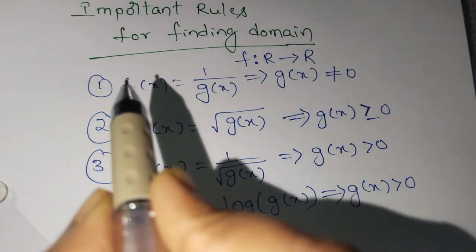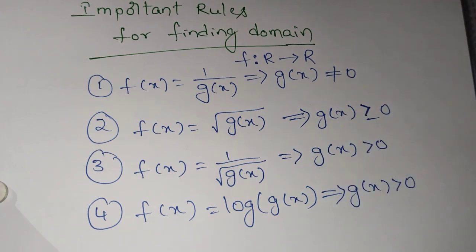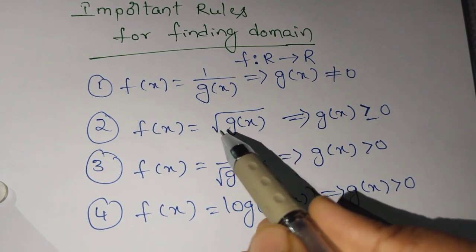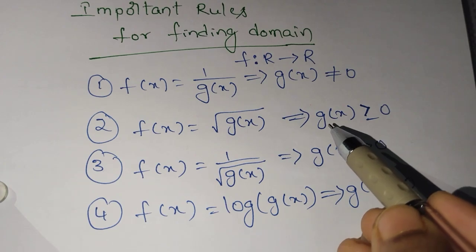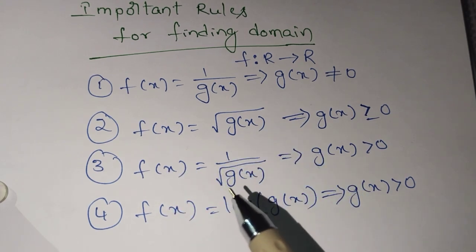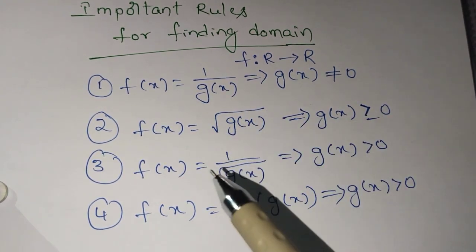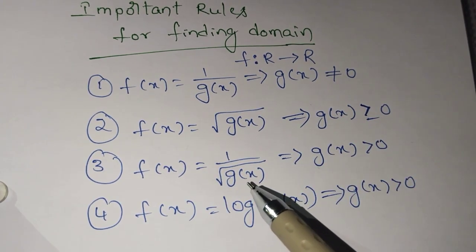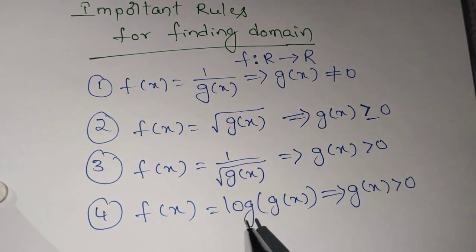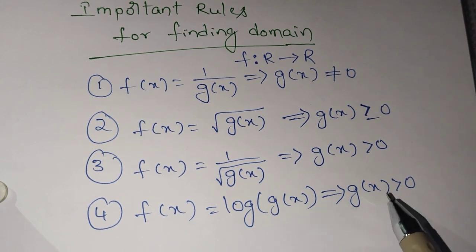Important rules for finding domain. When f(x) = 1/g(x), then g(x) ≠ 0. When f(x) = √g(x), then g(x) ≥ 0. When f(x) = 1/√g(x), since the square root is in the denominator, taking 0 makes it undefined, so g(x) > 0. When f(x) = log(g(x)), the log function requires g(x) > 0.